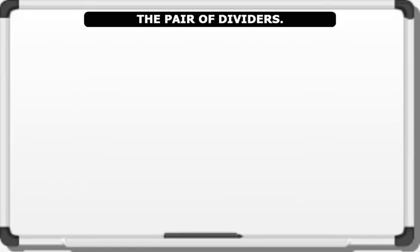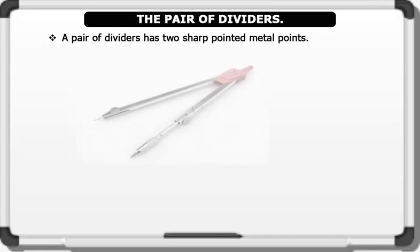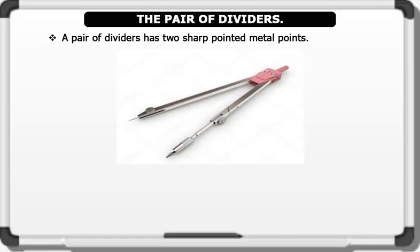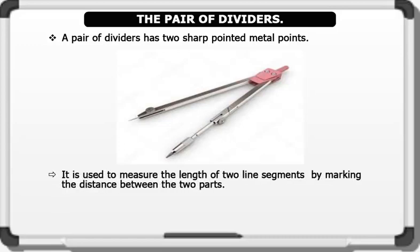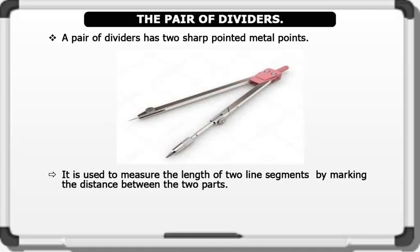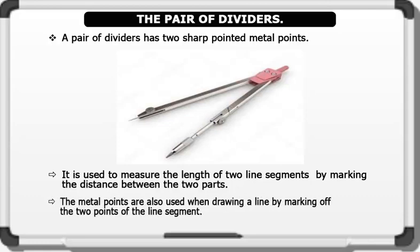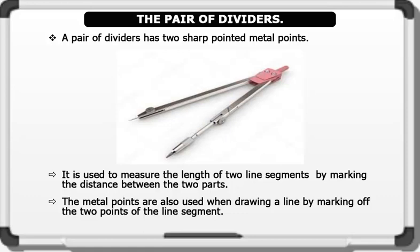5. The pair of dividers. A pair of dividers has two sharp pointed metal points. Below is the image of a divider. The uses of a divider include: 1. It is used to measure the length of two line segments by marking the distance between the two parts. 2. The metal points are also used when drawing a line by marking off the two points of the line segment.